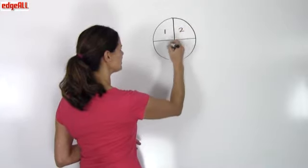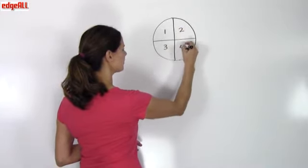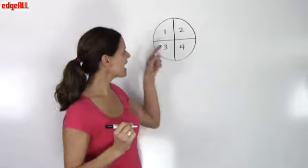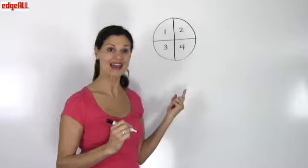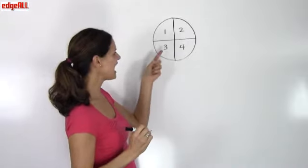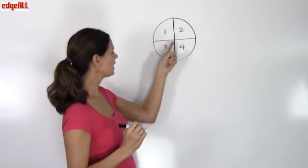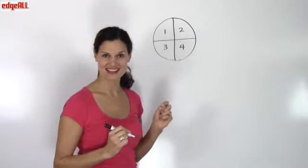One, two, three, four. And I can either still see this as one whole pie or I can look at it as four fourths of a pie.